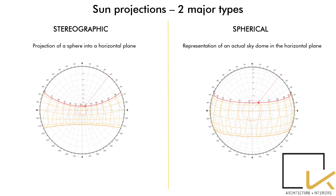Let's closely look into the Sun Path Diagram for the Horizontal Plane. There are two significant types of Sun Path Projection onto the Horizontal Plane: Stereographic Projection and Spherical Projection. Stereographic Projection is a projection of a sphere into a horizontal plane. Spherical Projection is a representation of an actual sky dome in the horizontal plane.